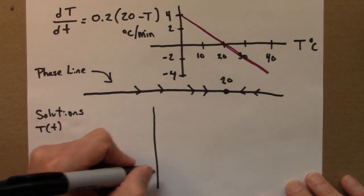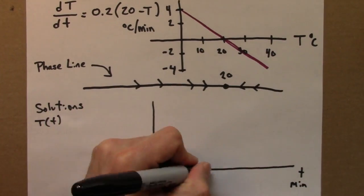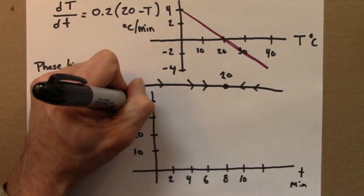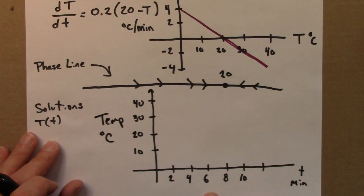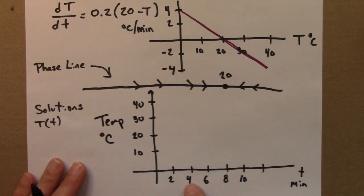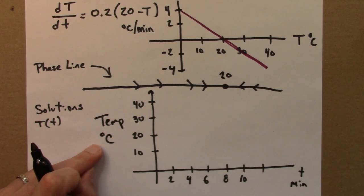Let me draw some axes. So here are my axes, and now on the horizontal axis is time, t in minutes, and then here is temperature, degrees Celsius.